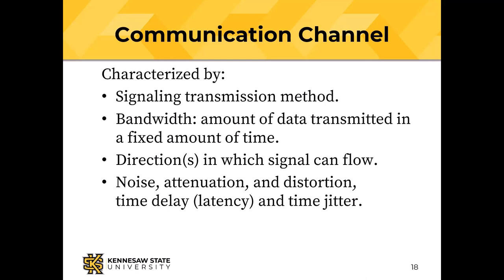Attenuation is loss of signal strength over distance. Shouting as loudly as possible, nobody in the parking lot can hear you — walls attenuate the sound. Distortion is when the shape of the signal gets changed.